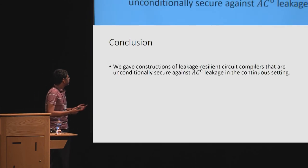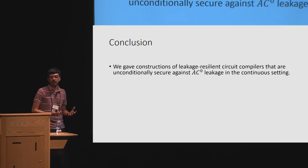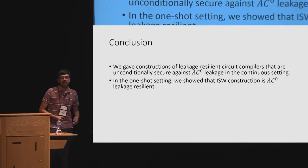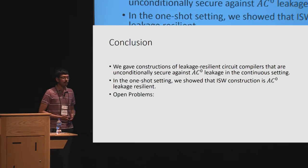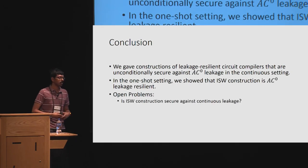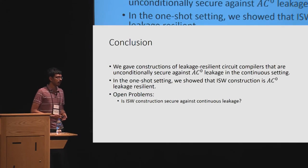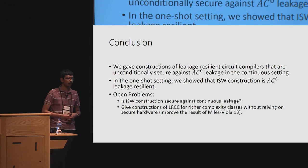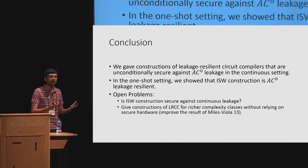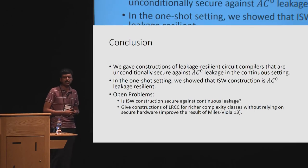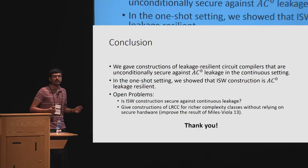To conclude: the main result of this talk is a construction of leakage-resilient circuit compilers that are unconditionally secure against AC0 leakages in the continuous setting. In the one-shot setting, we showed the ISW construction as-is is AC0 leakage-resilient. Some interesting open problems: whether the ISW construction is secure against continuous leakage (currently we have neither an attack nor a proof); and constructing leakage-resilient circuit compilers for richer complexity classes beyond AC0, ideally without trusted hardware, which would directly improve the result of Miles and Viola from 2013.